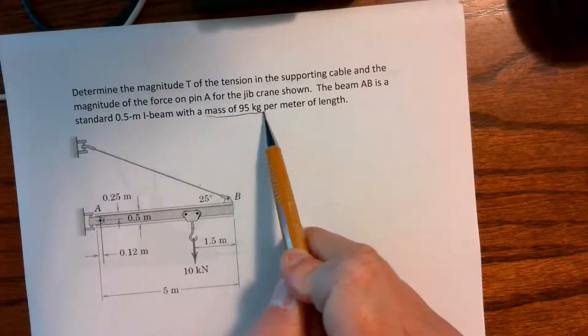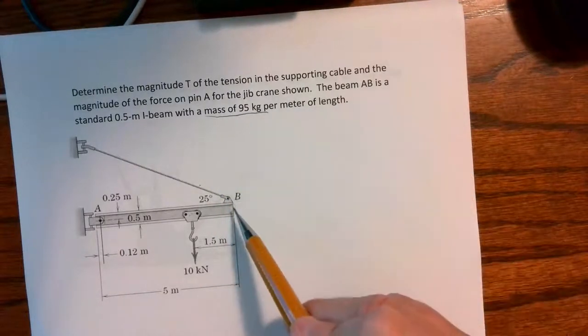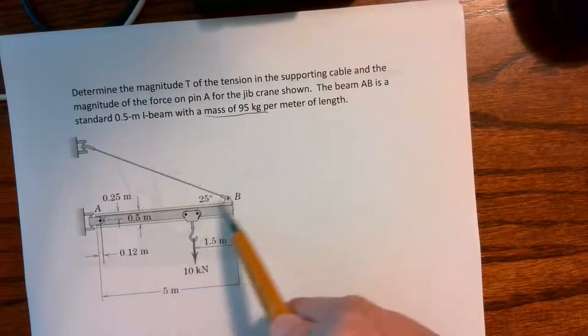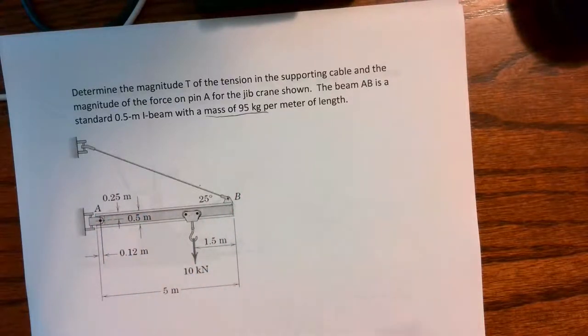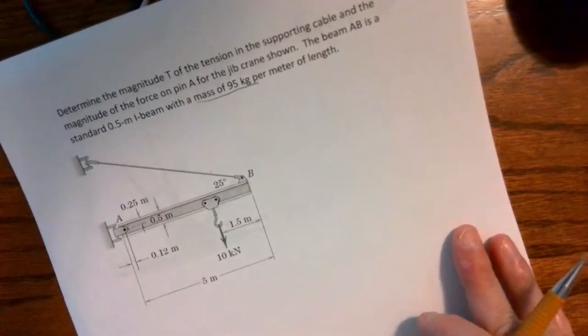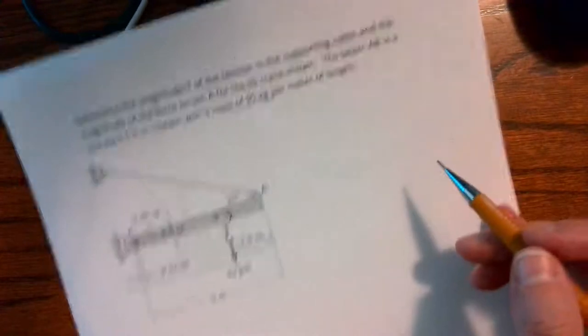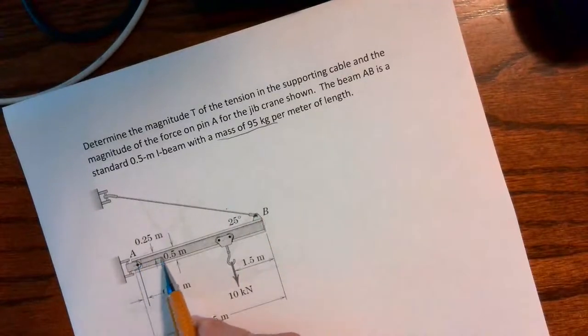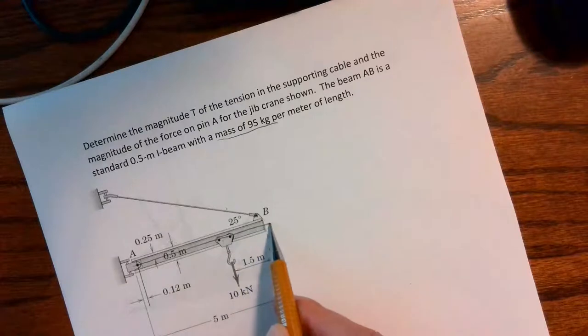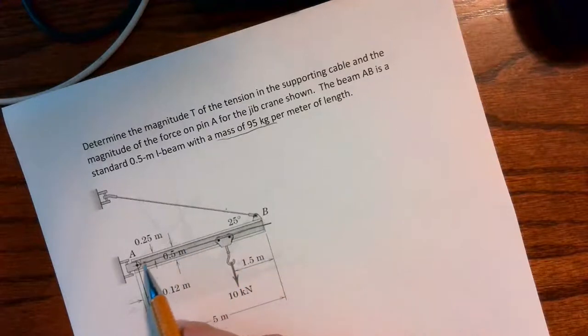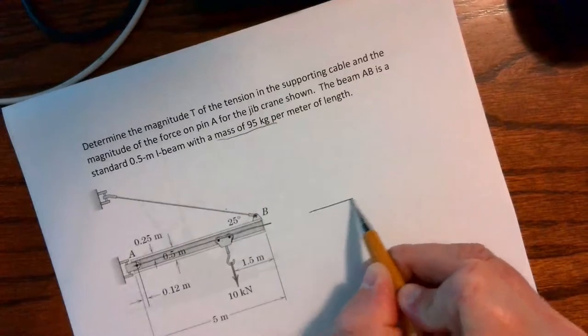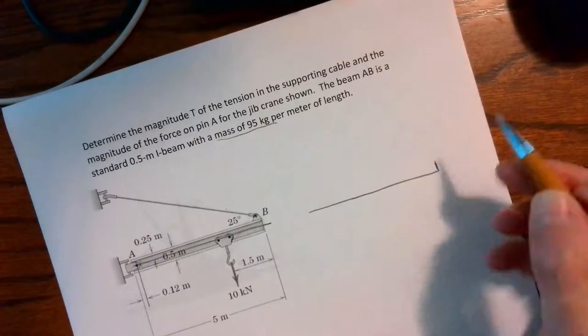The other thing is we need to take into account this one has a mass, so we're going to need to account for the weight of the beam. A lot of times like the last two examples we just kind of ignored the self-weight. Point B is offset from the centroid, so I need to make sure I draw a free body diagram that includes that offset.